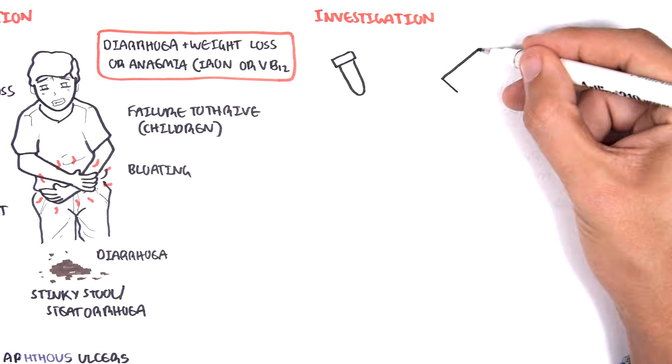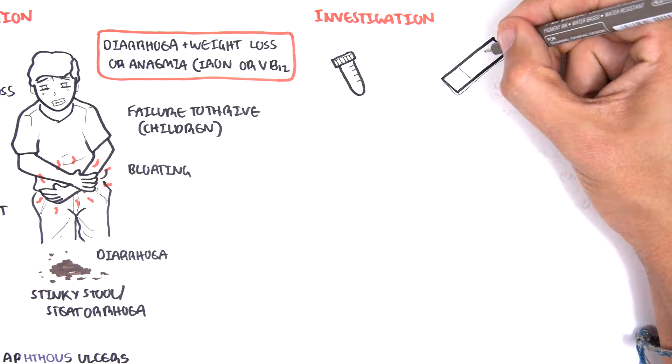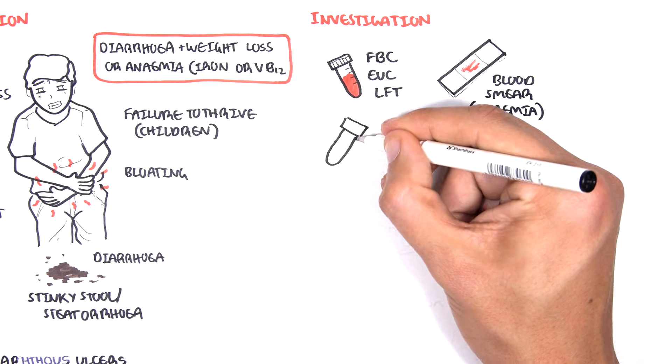Investigations include a full blood count, which will detect anemia or any possible infections. Electrolyte urea creatinine is important to check for any electrolyte derangement, as well as malabsorption. LFTs is also important to rule out differential diagnoses that can affect the liver or the biliary tree. Blood smear is also important to check for what type of anemia.